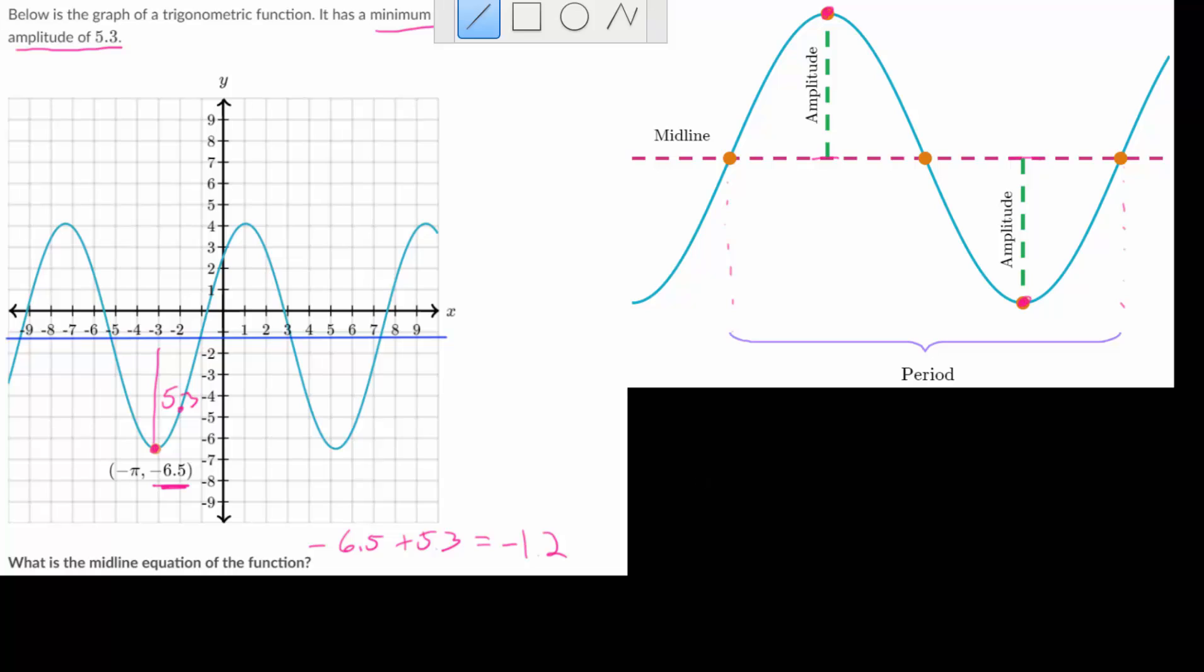And we can roughly test this by also looking at a maximum point. Since we know the midline if we add the amplitude we can find the maximum value. If we take this minus 1.2 and we add 5.3 to that or if we take 5.3 and subtract 1.2 we would get back 4.1 and we can see that roughly speaking it does look like the maximum values are right about 4.1.